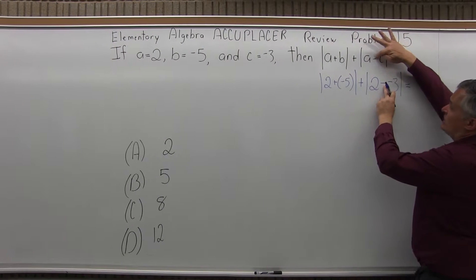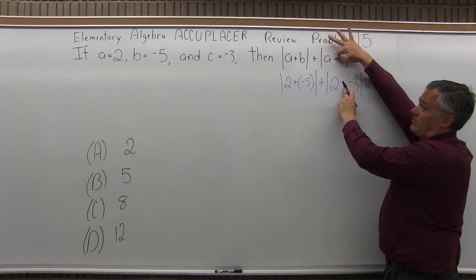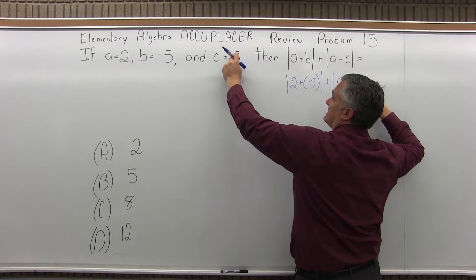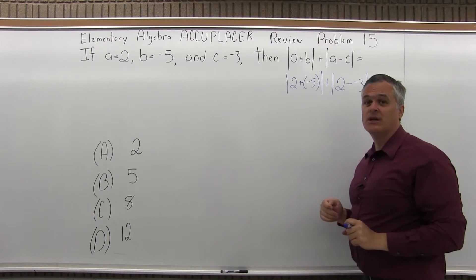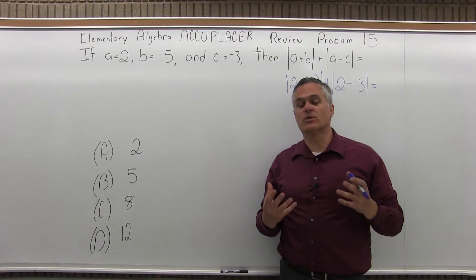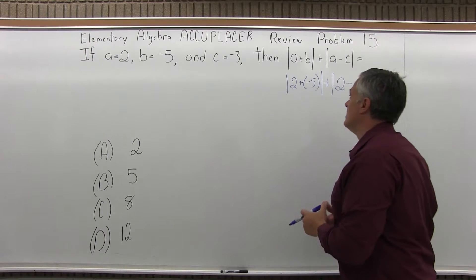Notice the two minuses. One minus is from the problem where it says A minus C and the other minus is from the fact that C is a negative value, it's negative 3. And what's going to happen is I simplify that minus and minus coming together will cancel and become a plus.